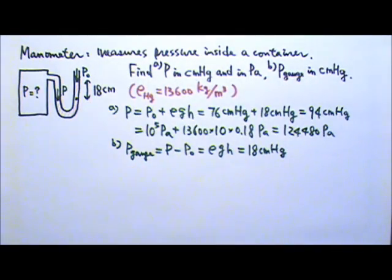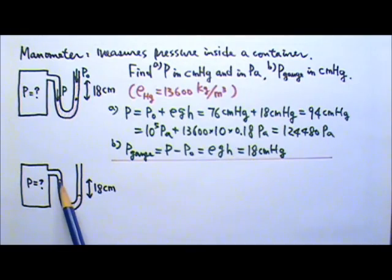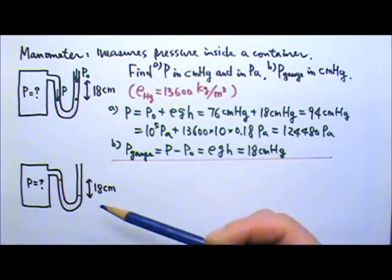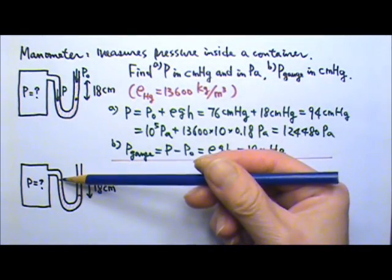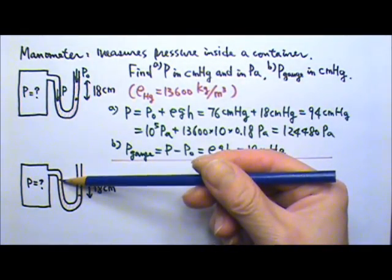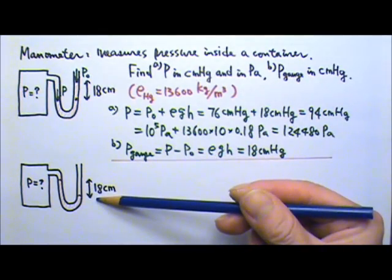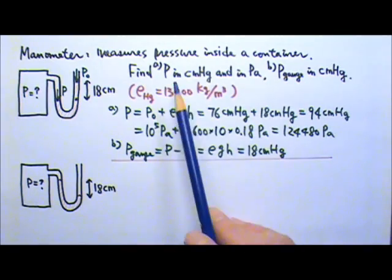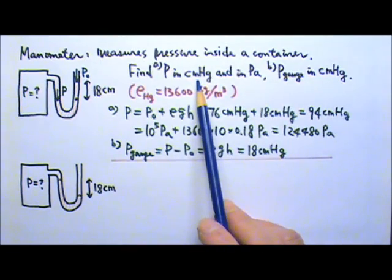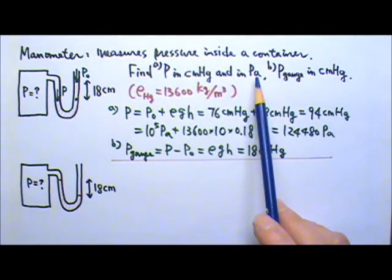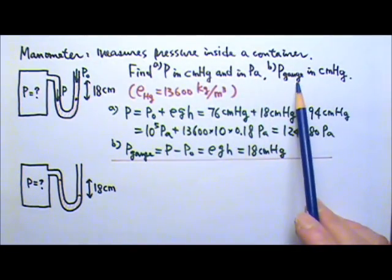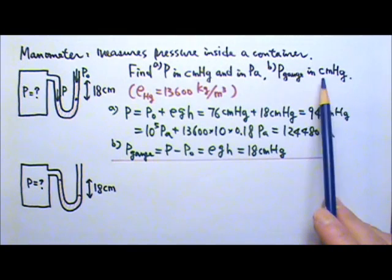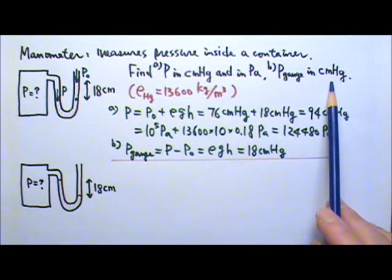Perhaps this is why it's called the gauge pressure — because it comes directly from the height reading of the manometer. What if the mercury in the manometer looks like this, with the mercury column taller on the left side by 18 centimeters? Again, find the pressure inside the container in centimeter mercury and in Pascals, and find the gauge pressure in centimeter mercury.